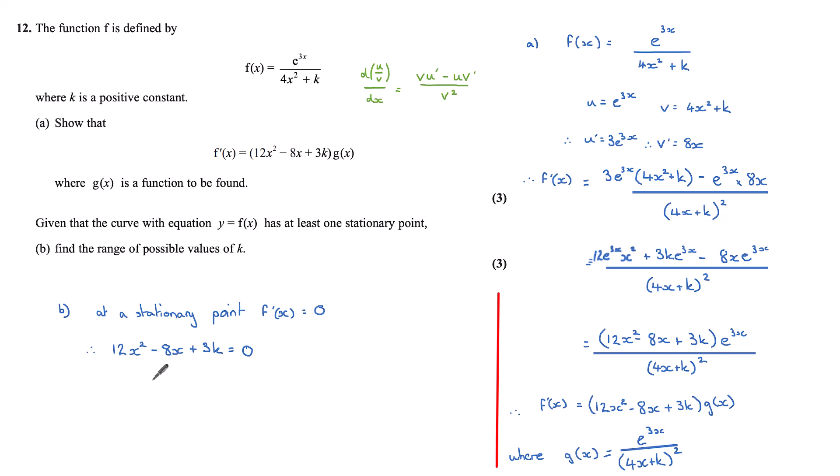And in order for this to have at least one stationary point, then we need the discriminant of this quadratic to be greater than or equal to zero. So remember your discriminant is b² - 4ac.